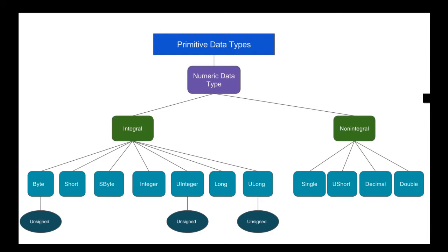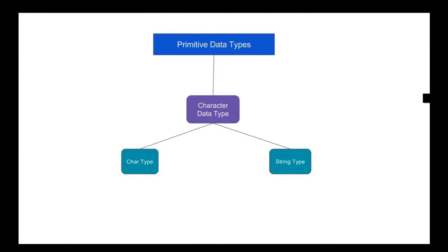The Double data type holds 8 bytes of storage and is a very large number that can be used for fractions. Moving to the character data type, we have the Char type and the String type. The Char type holds 2 bytes of storage allocation and is used to hold one single character — for example, 'Dim letter As Char = "h"'. The String is the most common used character data type and can hold from 0 to approximately 2 billion Unicode characters.